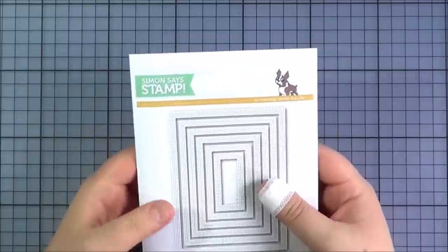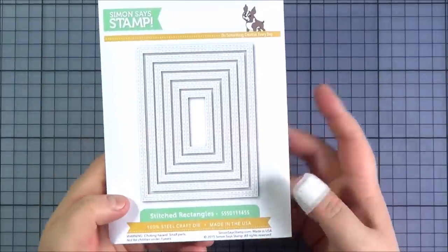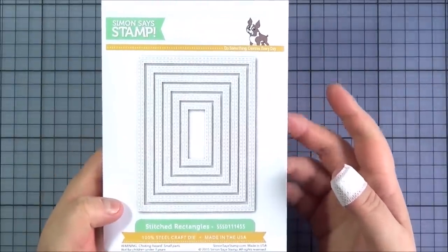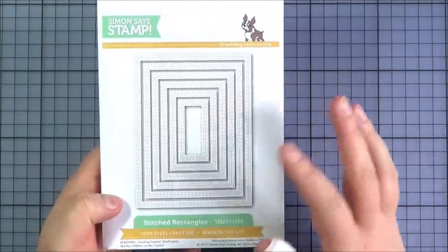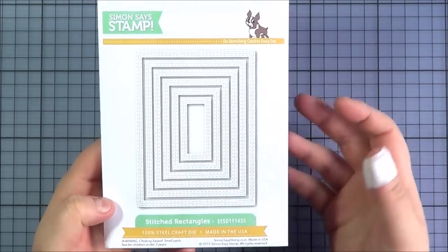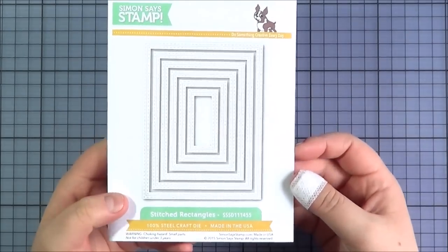And then I've got a couple of Simon Says Stamp exclusive dies and stencils and stamps. First of all I got these stitched rectangle dies. If you've watched my haul videos in the past, I got the squares and the circles and I thought I would probably end up getting the rectangles as well. I'm really happy I did.